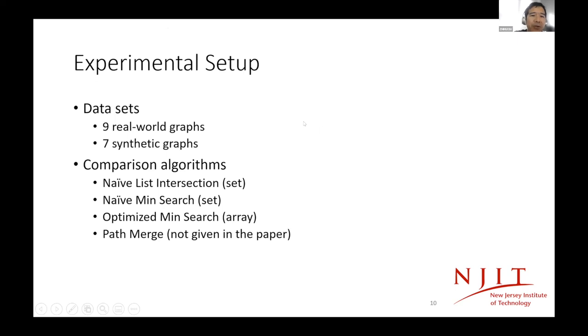Our experiment used real-world graphs and synthetic graphs. We compared different kinds of algorithms. We use naive list intersection method and the naive minimum search method. And we use an optimized minimum search method. We also developed a path-merge method. But because the room is limited, our paper does not include all the experimental results.